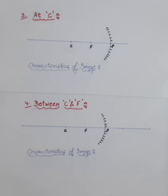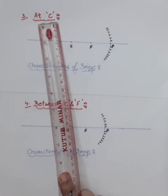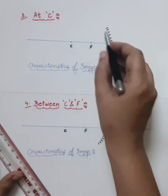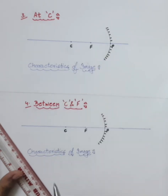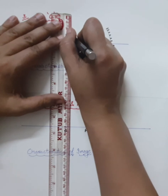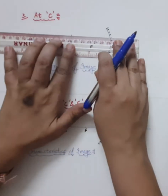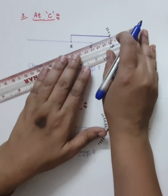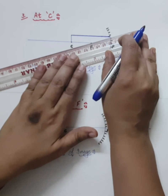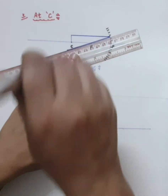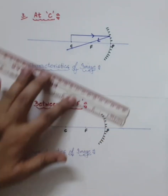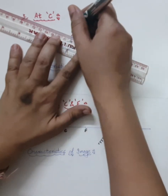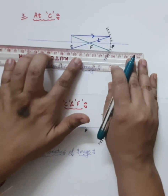Third position: object kept at C, the center of curvature. Draw the principal axis, concave mirror, mark the pole, 3 cm to focus, and 3 cm to center of curvature. Place the object at C. One ray goes parallel and passes through focus after reflection. The second ray passes through focus and reflects parallel to the principal axis.